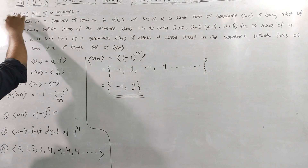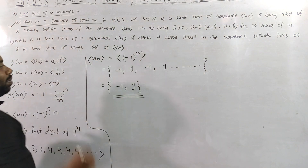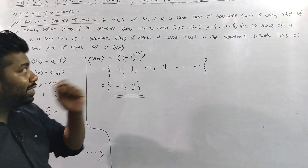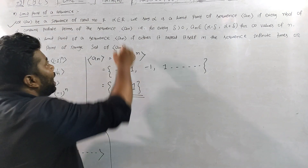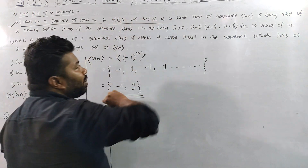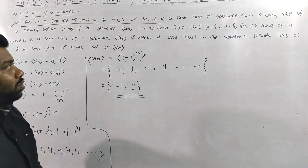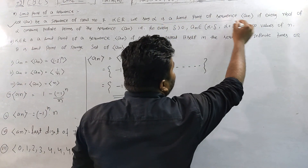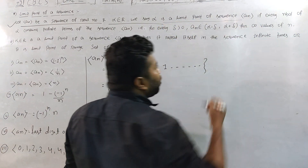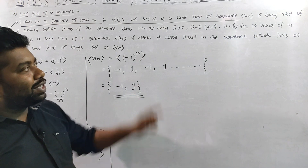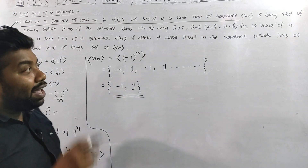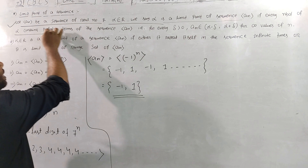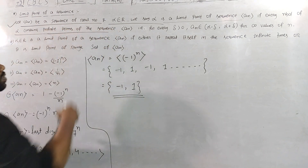Let (a_n) be a sequence of real numbers. Alpha belongs to our set of real numbers. We say that alpha is a limit point of a sequence (a_n) if every neighborhood of alpha contains an infinite number of terms of the sequence.